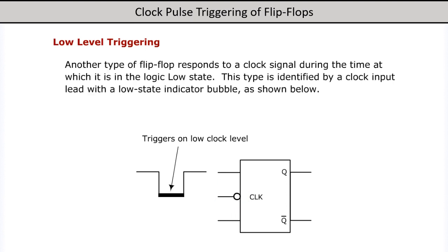Low-level triggering: another type of flip-flop responds to a clock signal during the time at which it is in the logic low state. This type is identified by a clock input lead with a low state indicator bubble, as shown below.